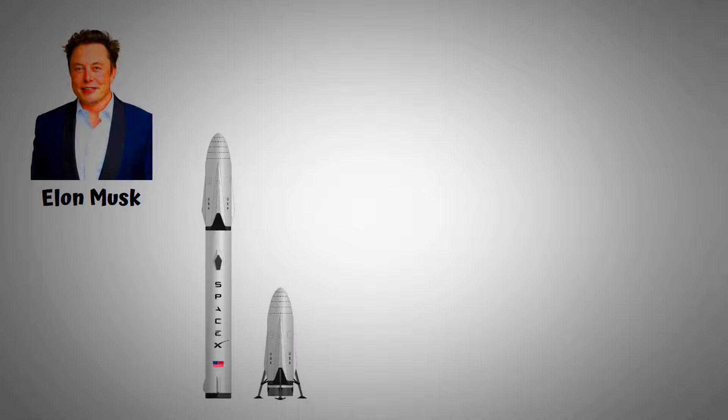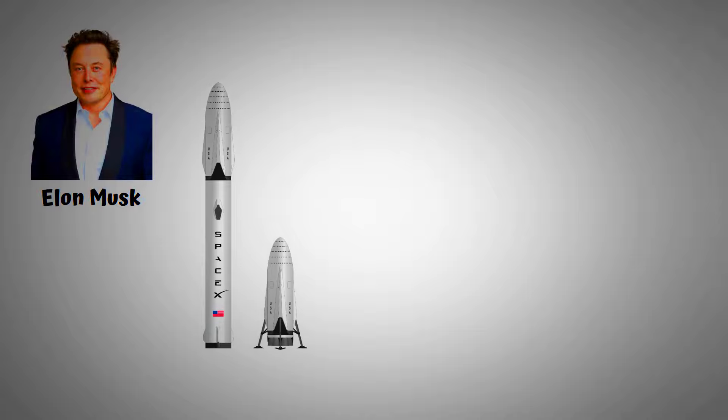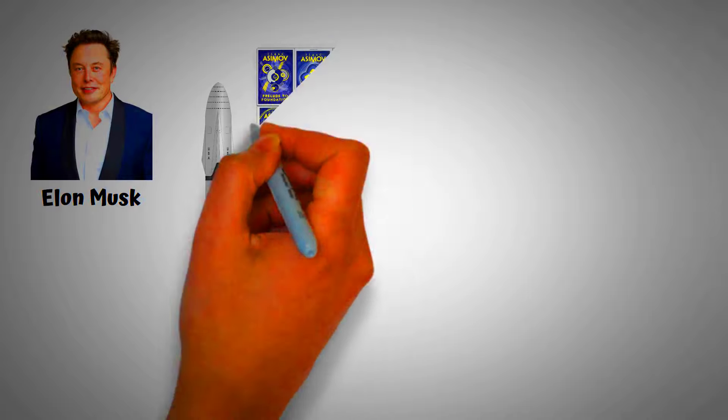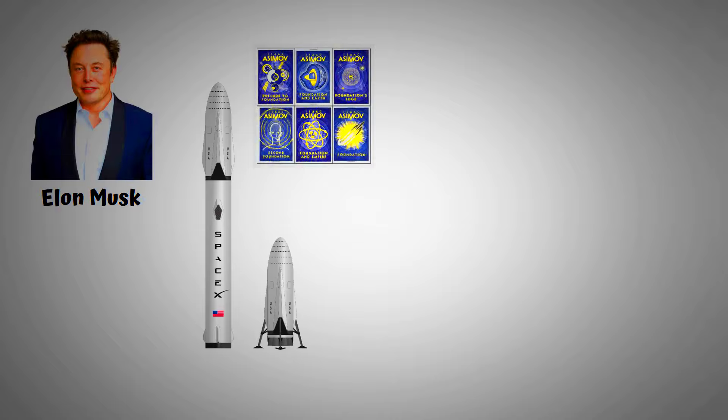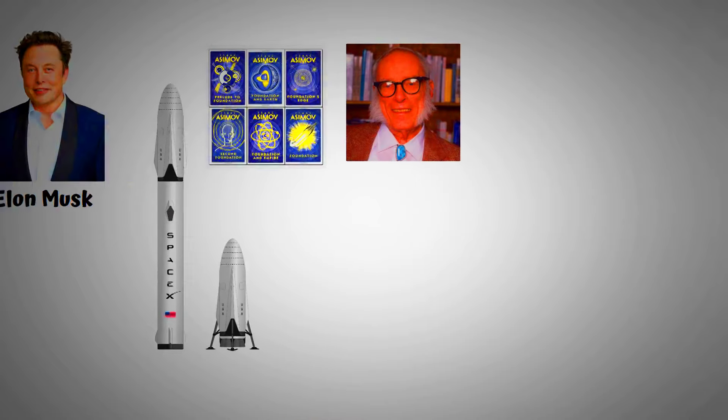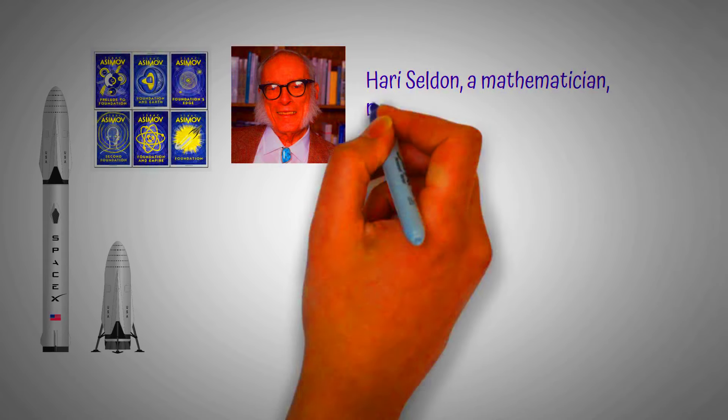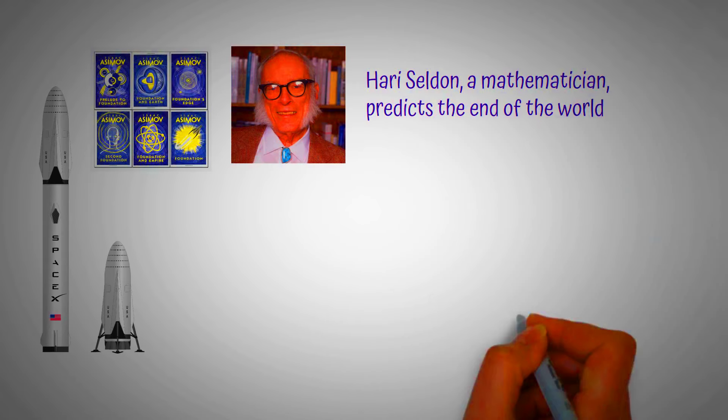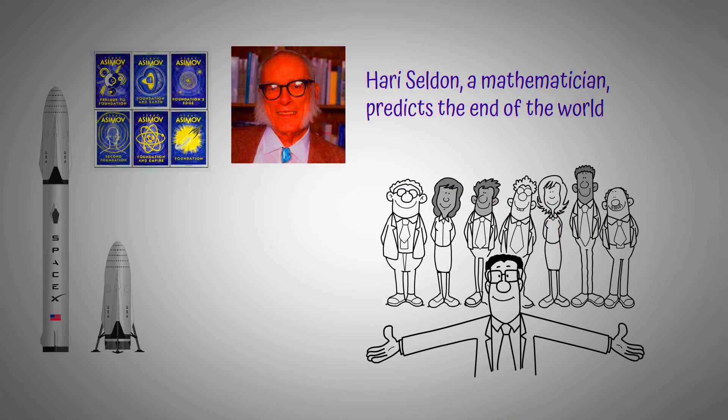He gives the entire credit for starting the SpaceX Company to the Foundation series. This book was written by Isaac Asimov, which is a science fiction novel written around the 1950s. In this book, Harry Seldon, a mathematician, predicts the end of the world and forms a team of scientists and engineers called the Foundation.